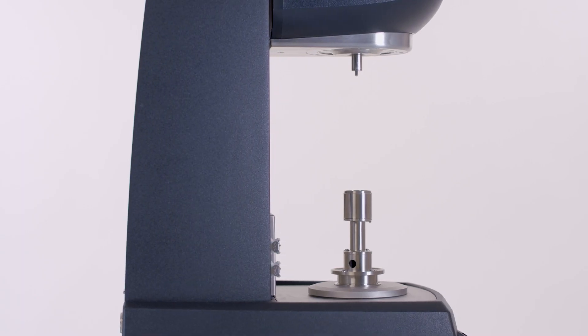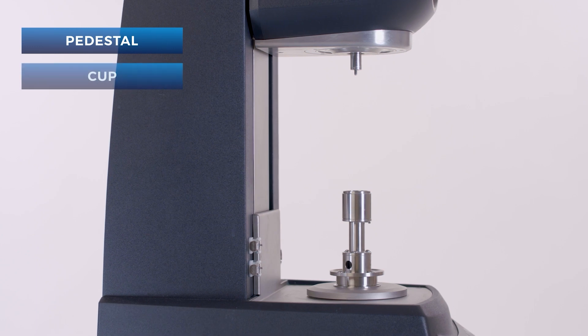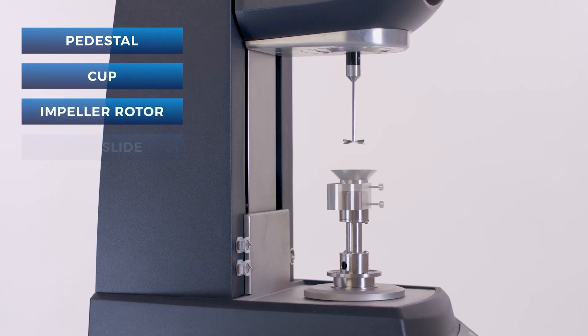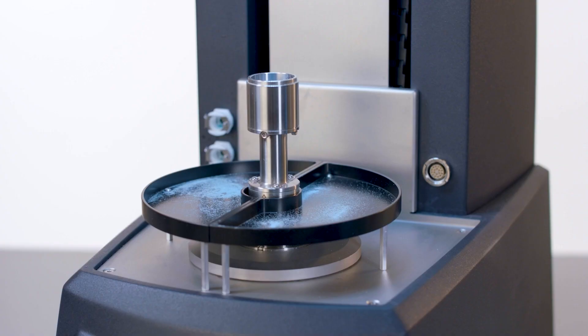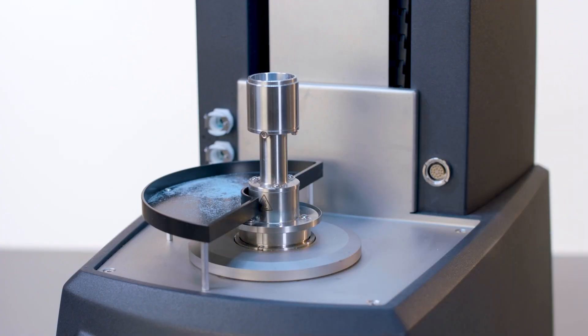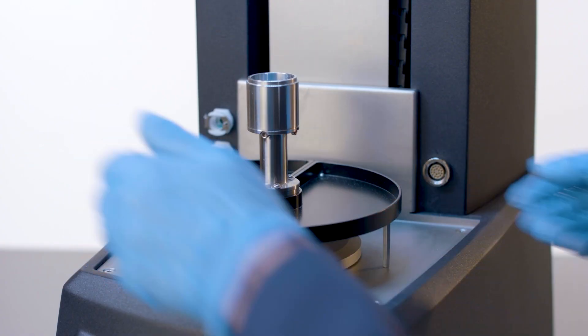The flow cell accessory consists of the pedestal, cup, impeller rotor, trim slide, trim funnel, and catch tray. The catch tray is placed around the pedestal to catch powder for easy cleanup.